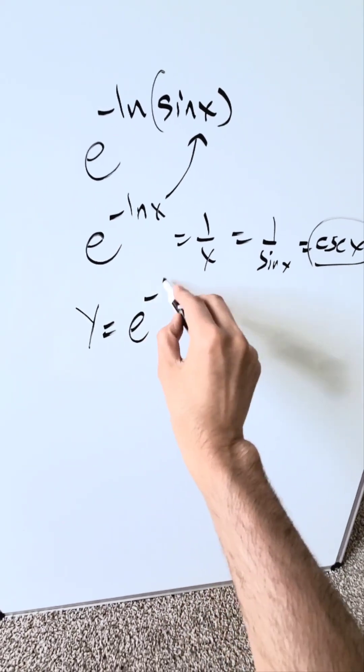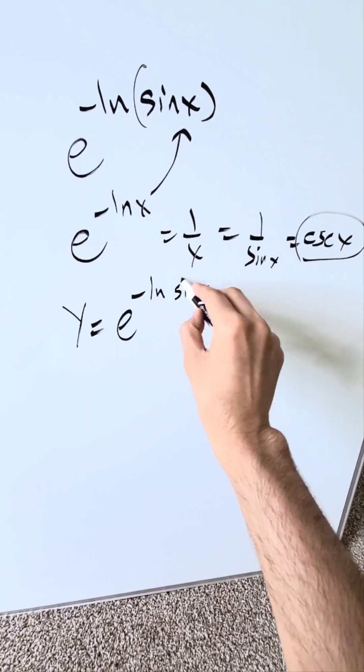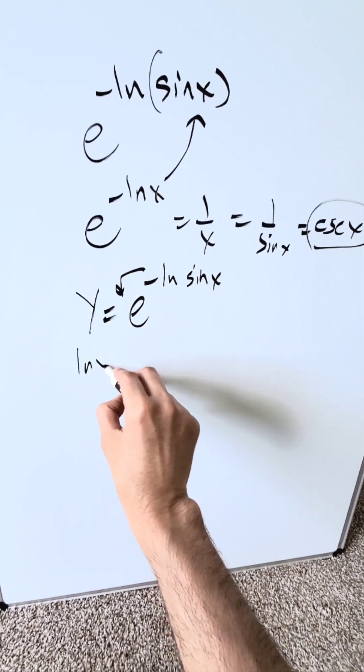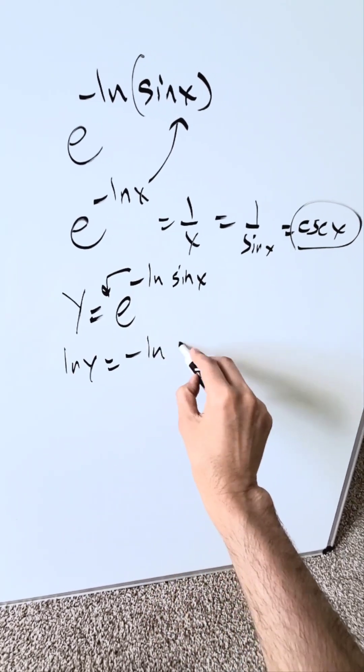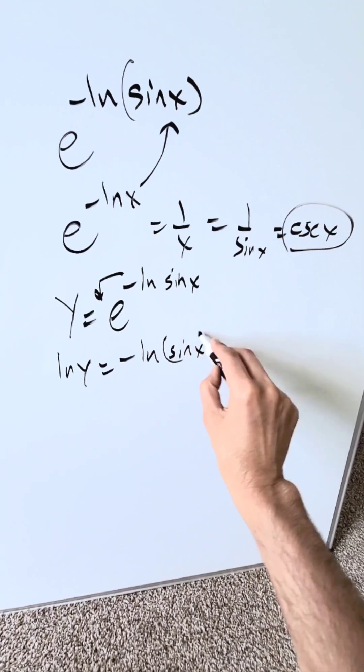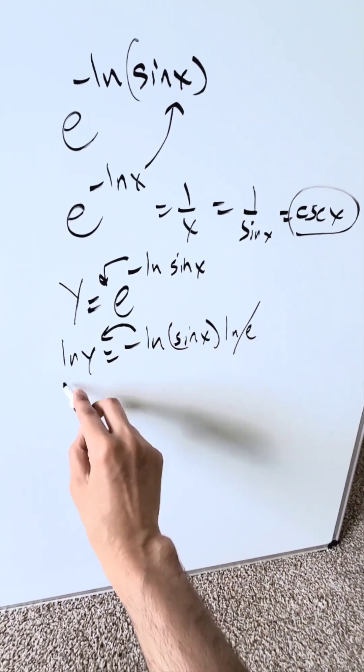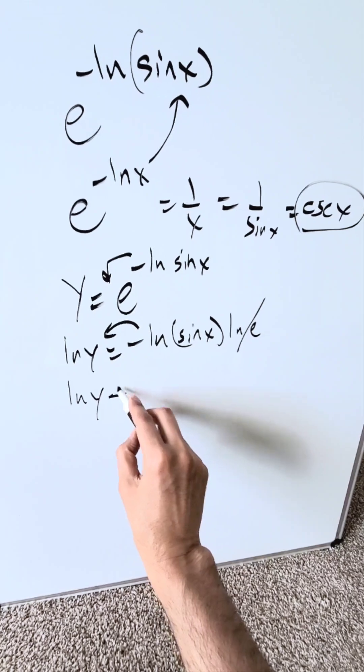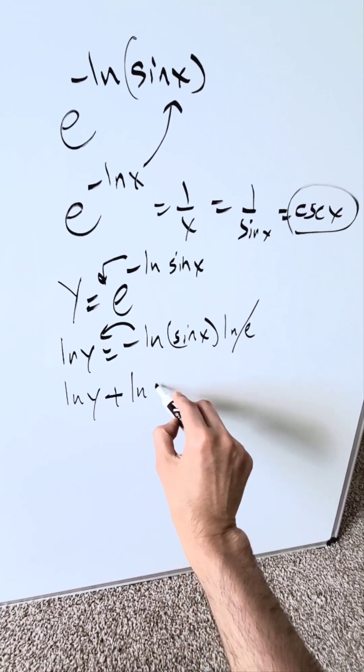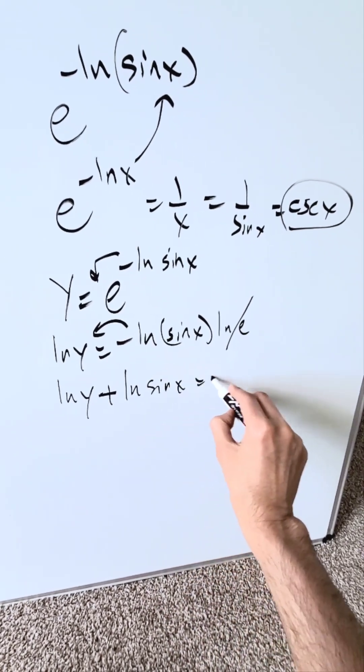You have y equals e to the power of minus natural log sin x. You'd bring in your properties of logs. I have natural log y equals minus natural log sin x. And then I have natural log e, which equals 1—it goes away. You'd push this on the other side, make everything equal to 0. This will add natural log sin x equals 0.